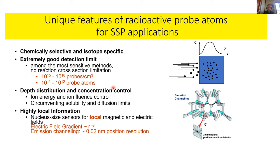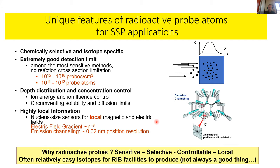You can also play games with the depth distribution — you can control the ion energy into the material and go beyond certain diffusion limits not easily possible with other techniques. You get local magnetic and electrical field information not always extractable using other techniques. With the emission channeling technique, you can get very precise information on where atoms and chemical elements are residing inside a host lattice. So radioactive probes are sensitive, selective, controllable, and provide a local probe of the environment.